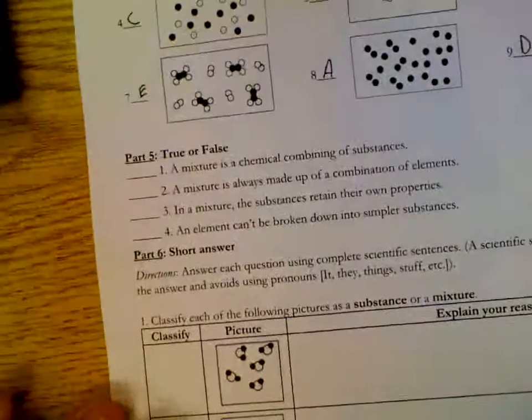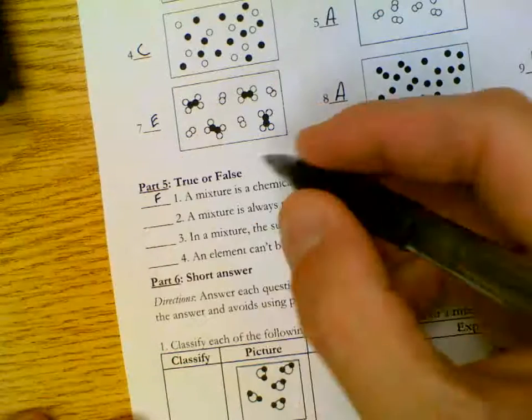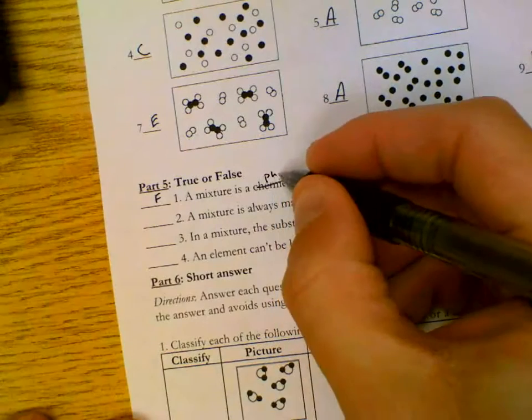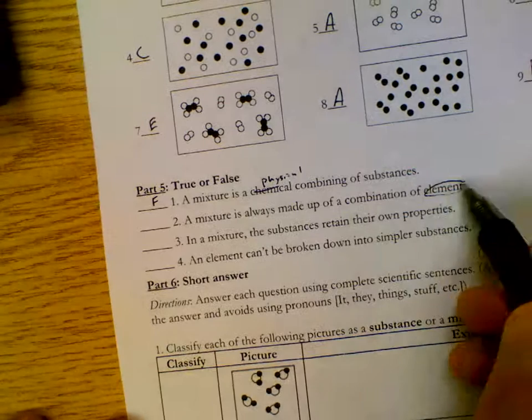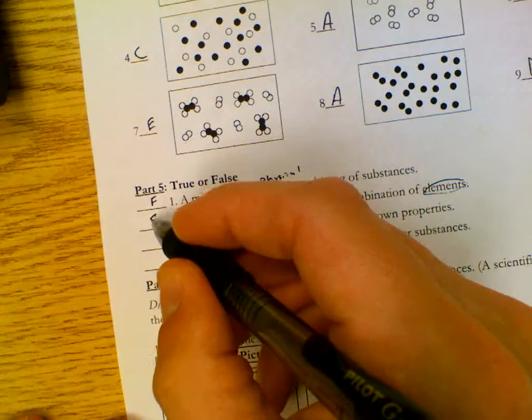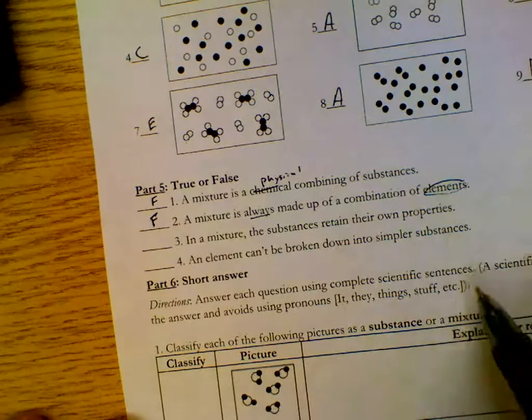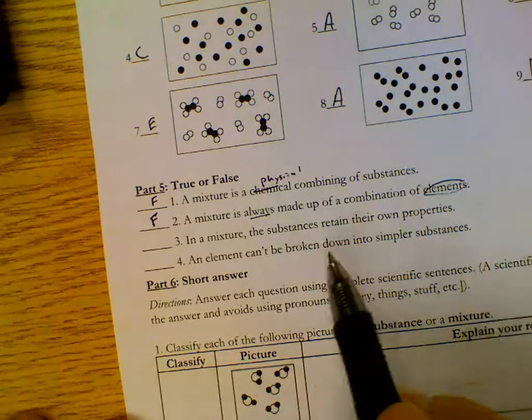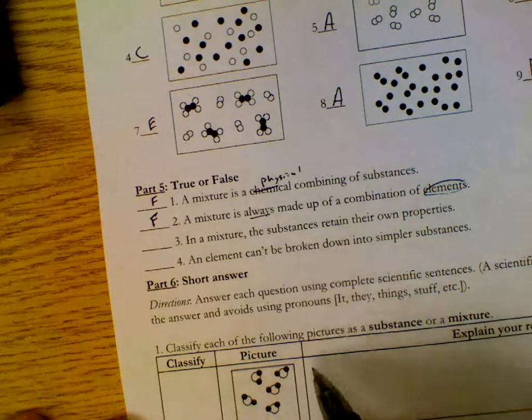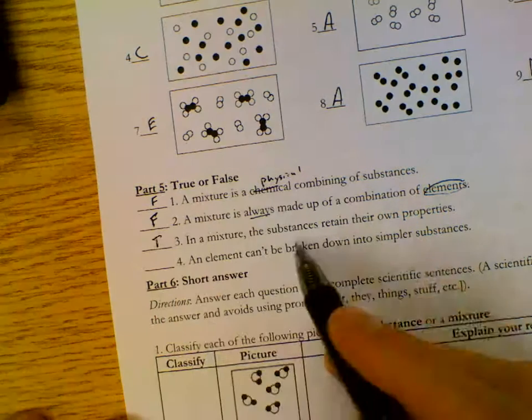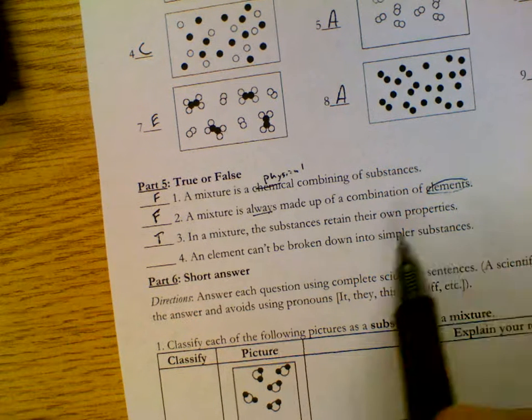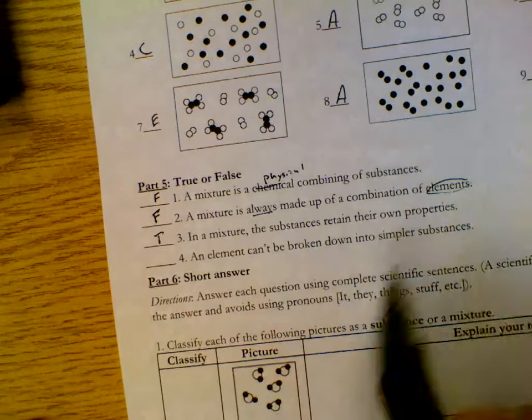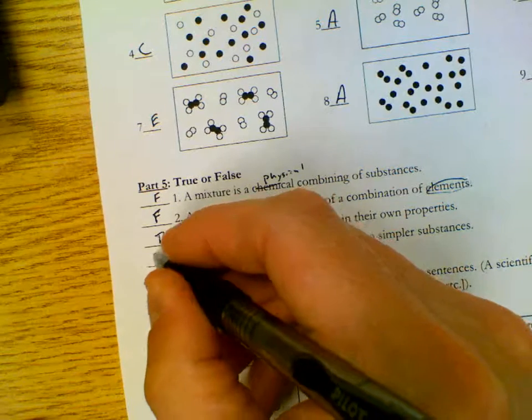A mixture is a chemical combining of substances. That's false. A mixture is physical. A mixture is always made up of a combination of elements. Or it always would make us think cautiously about that statement. That's false, because we could have two compounds. In a mixture, the substances retain their own properties. That's true. At least some of their own properties. If you put sugar in water, the sugar still has the sweetness that you can taste in sugar water. An element can't be broken down into simpler substances. That's true. At least not with the same identity.